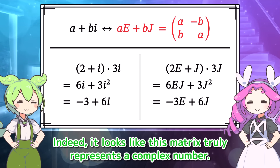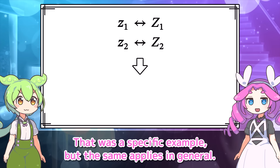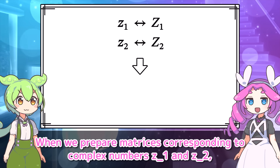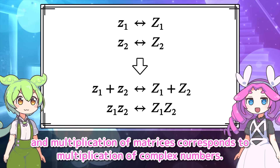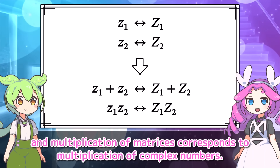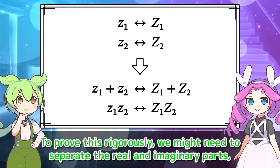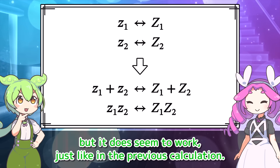It looks like this matrix truly represents a complex number. That was a specific example, but the same applies in general. When we prepare matrices corresponding to complex numbers Z sub 1 and Z sub 2, addition of matrices corresponds to addition of complex numbers, and multiplication of matrices corresponds to multiplication of complex numbers. To prove this rigorously, we might need to separate the real and imaginary parts, but it does seem to work, just like in the previous calculation.